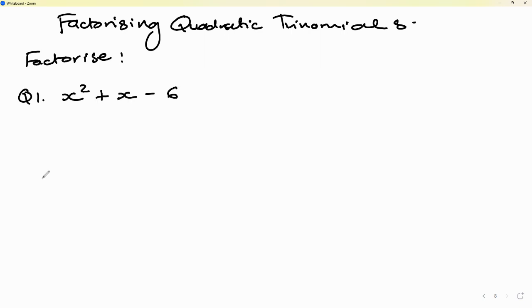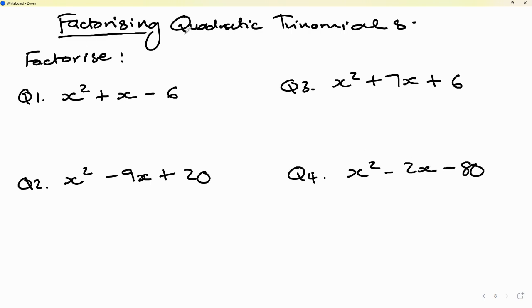x squared plus x minus 6. Question two, x squared minus 9x plus 20. Question three, x squared plus 7x plus 6. And question four, x squared minus 2x minus 80.